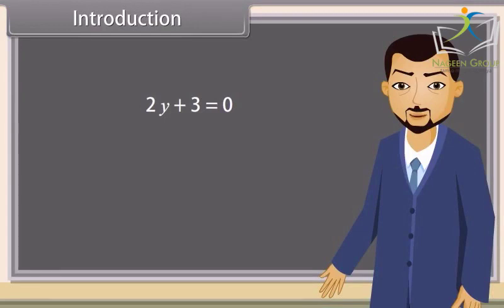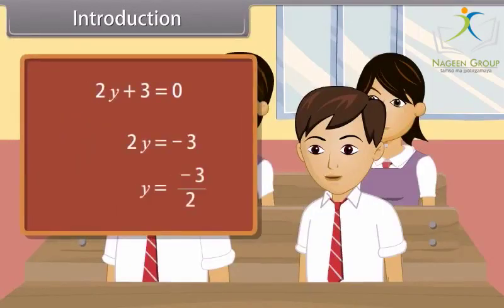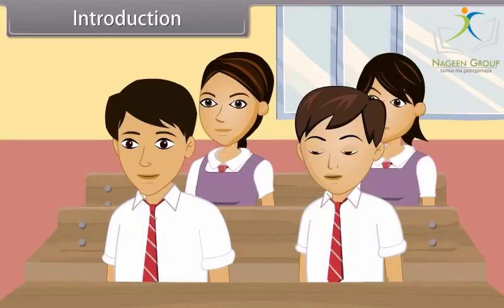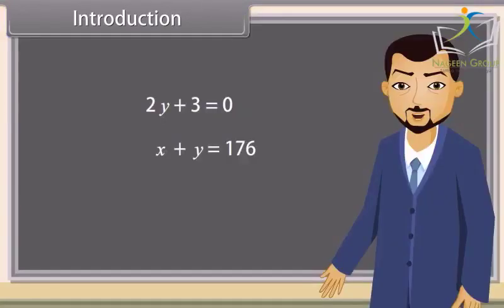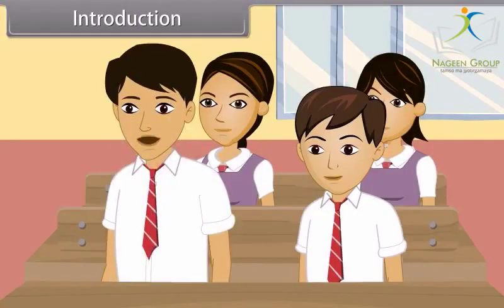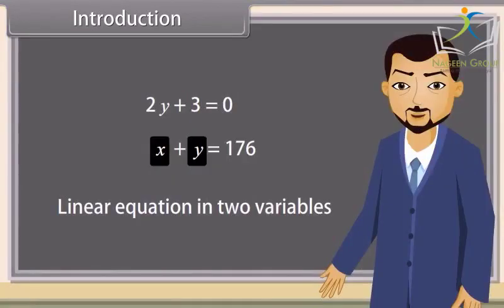Can you solve this equation? Yes, this is so easy. Correct. Now tell me which equation is this? This is also a linear equation. Yes, this is also a linear equation, but it has two variables, X and Y, so it is called a linear equation in two variables. We want to know more about this, sir. Okay, so we will study linear equations in two variables today.